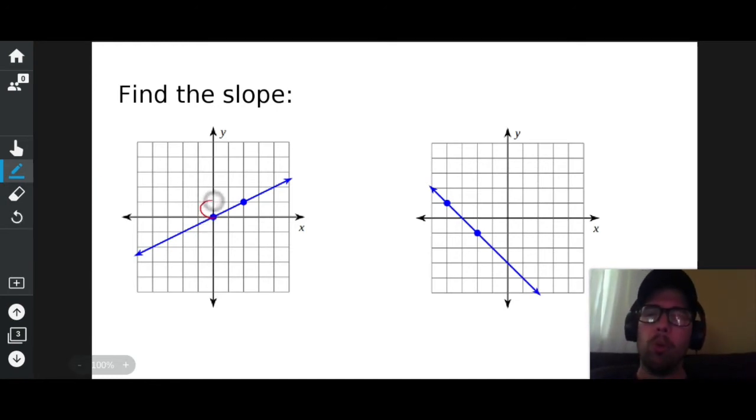Now I'm gonna figure out what it takes for me to get from one dot to the next dot. I'm going to rise one. So my slope so far is one. And I'm gonna go over to the right, one, two. So up one over two. One over two. That's it. My slope is positive one over two. Done.